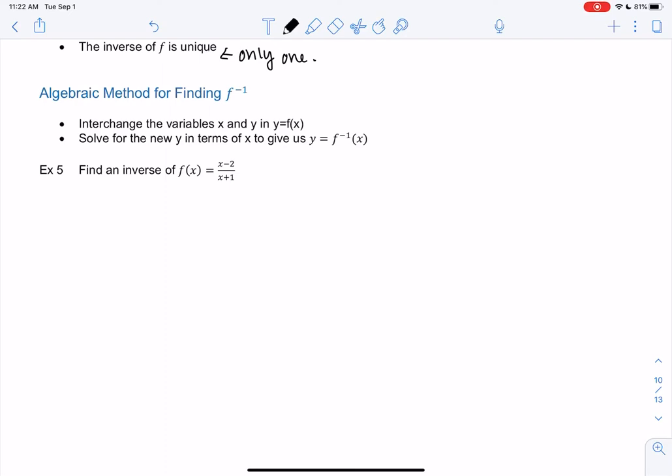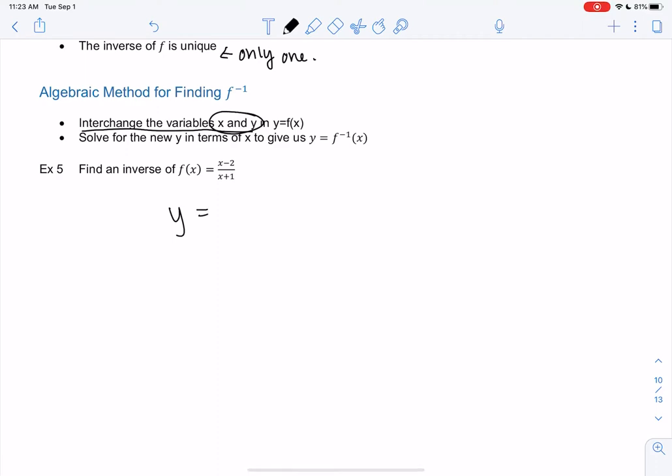Let's find an inverse. To find an inverse, the first step is to switch x and y. In this example, f of x equals (x minus 2) over (x plus 1). I'm going to rewrite as y equals (x minus 2) over (x plus 1), then switch x and y. So I rewrite this as x equals (y minus 2) over (y plus 1). Now we technically have the inverse—we just need to solve for y.